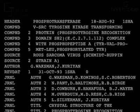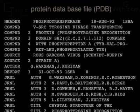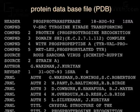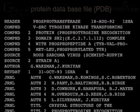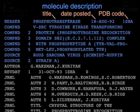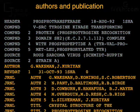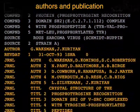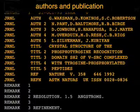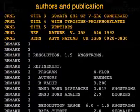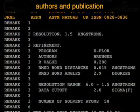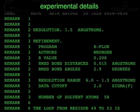Three-dimensional structures of macromolecules that have been determined by NMR or X-ray crystallography are archived in Protein Database Files, or PDB files for short. Each PDB file begins with the description of the molecule, credits to the authors who solved the structure, and experimental details of the analysis.